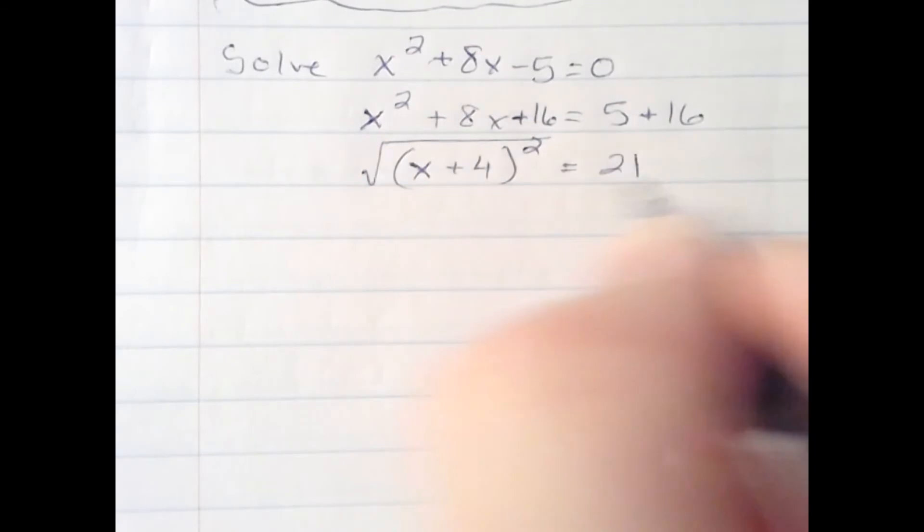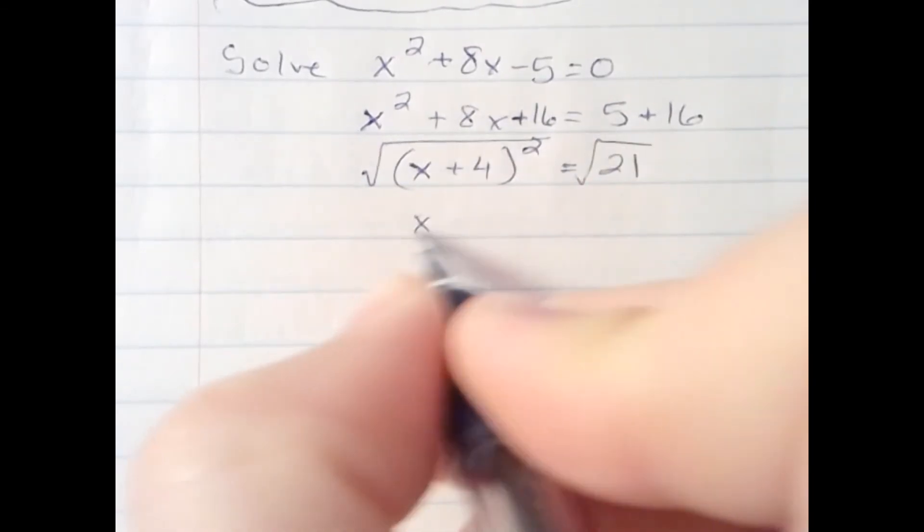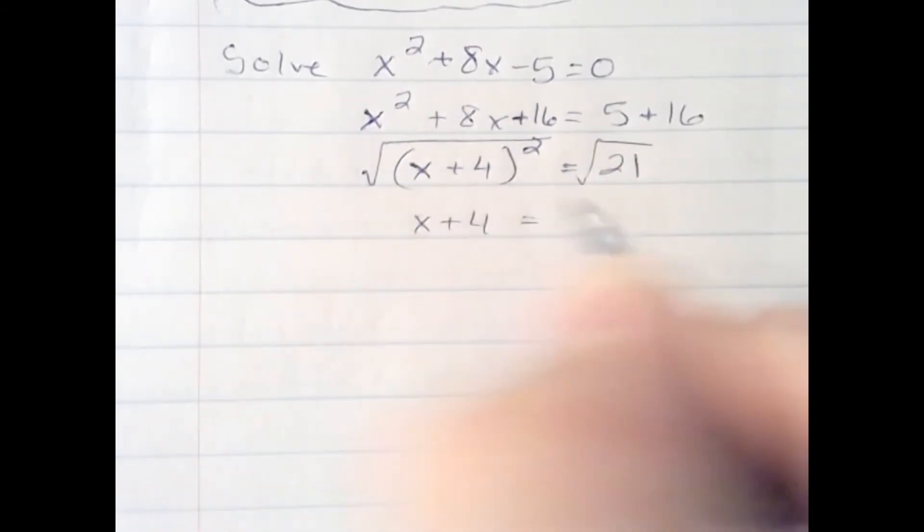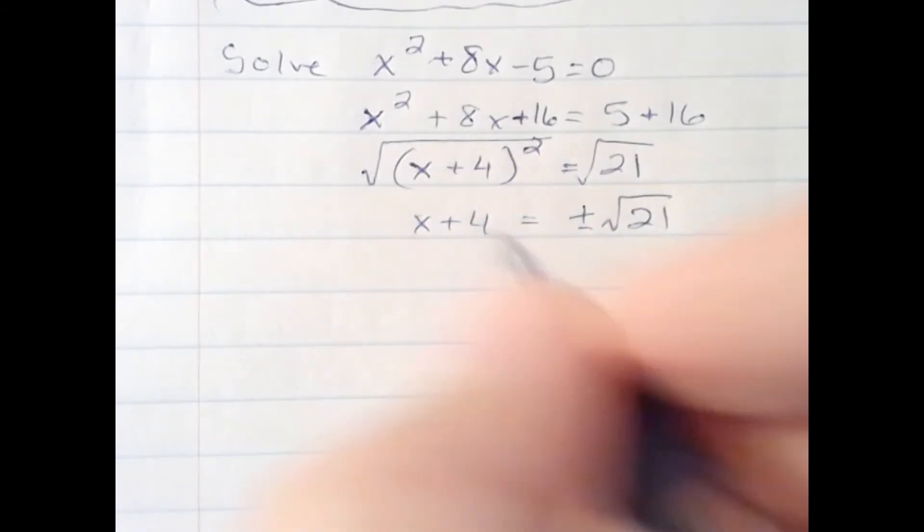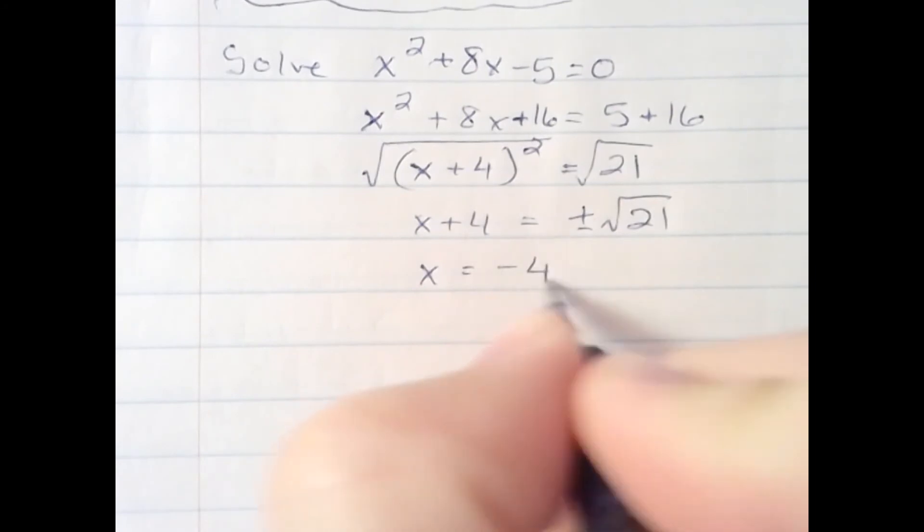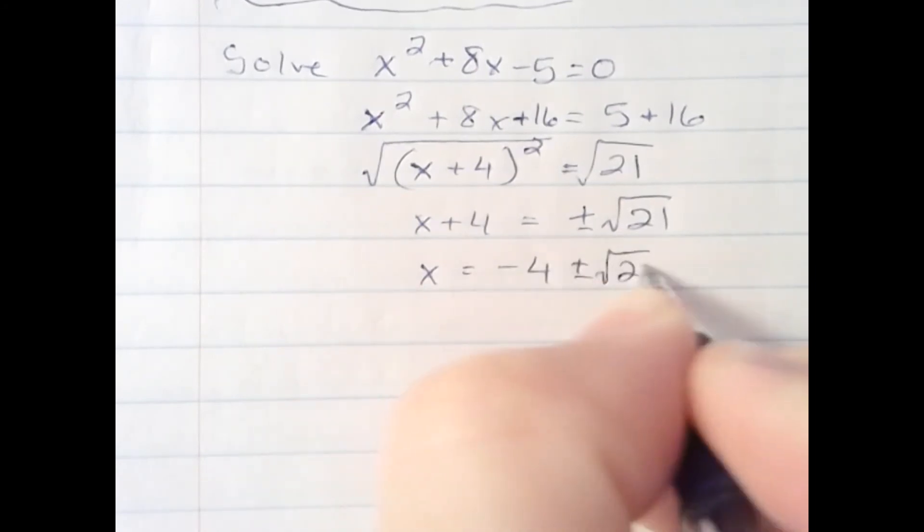Then I take the square root of both sides. x plus 4 is now by itself, and I do have plus or minus the square root of 21, which doesn't simplify. Last step is to subtract 4 from both sides, and then I have my answer.